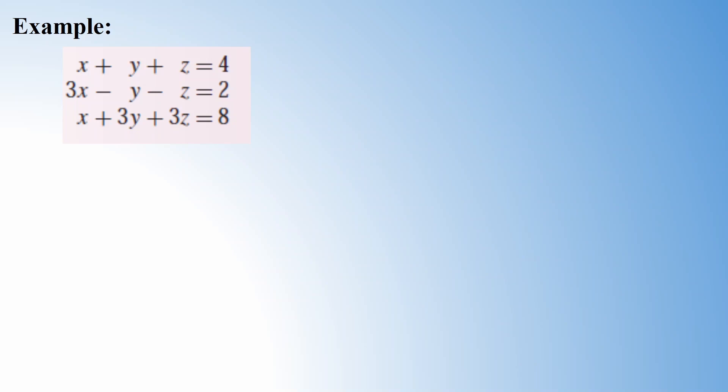We get the augmented matrix with the coefficient matrix on the left: rows 1 1 1, then 3 -1 -1, then 1 3 3 — and the constant vector on the right: 4, 2, 8. We now convert this augmented matrix into its row echelon form.